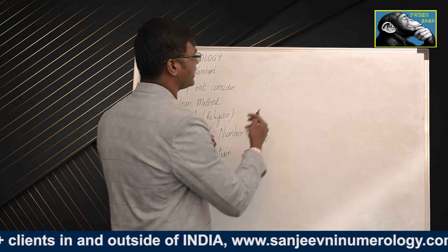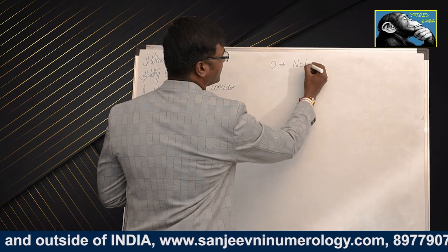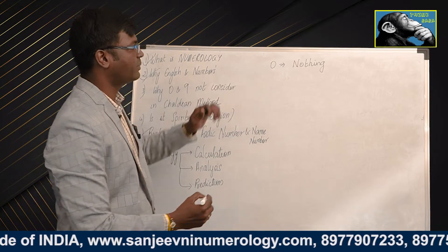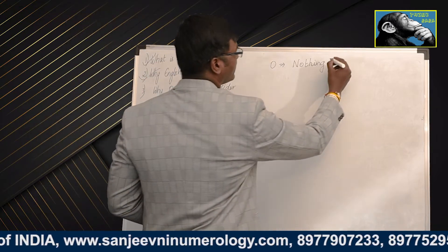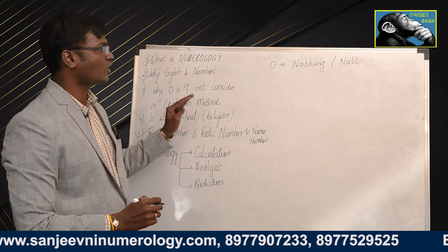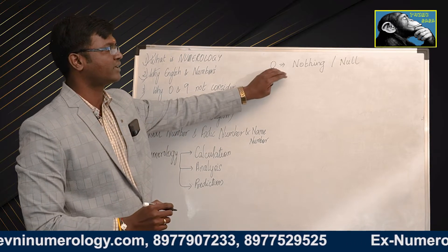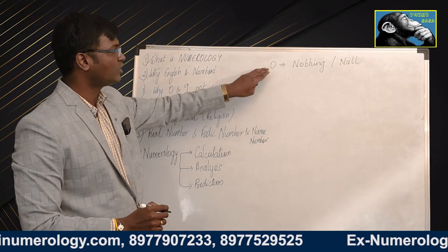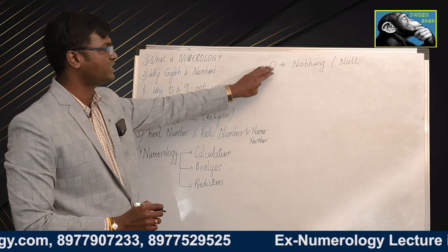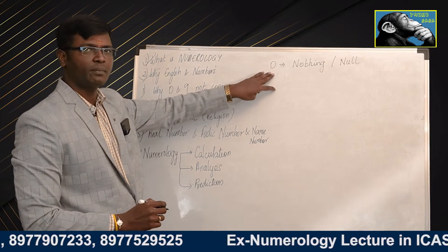According to the Chaldean Method, 0 means nothing. It is null. When we start with 0, we start with numbers 1, 2, 3. How much power does 0 have?